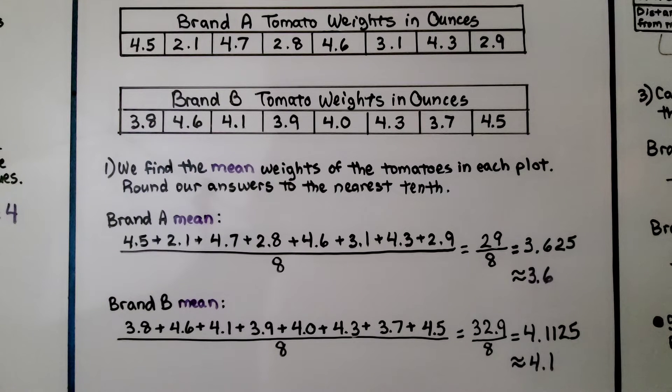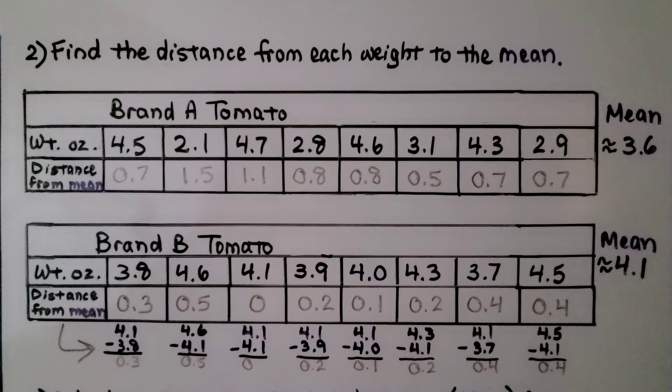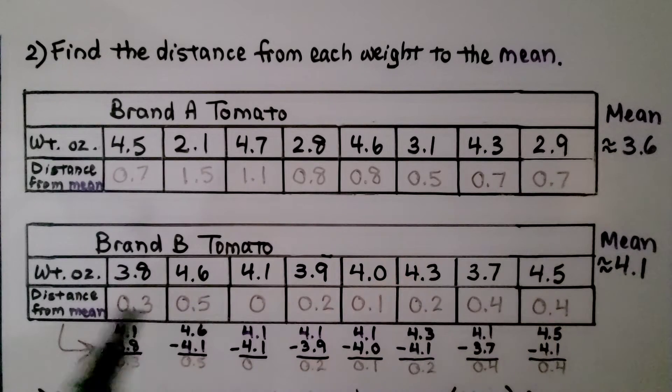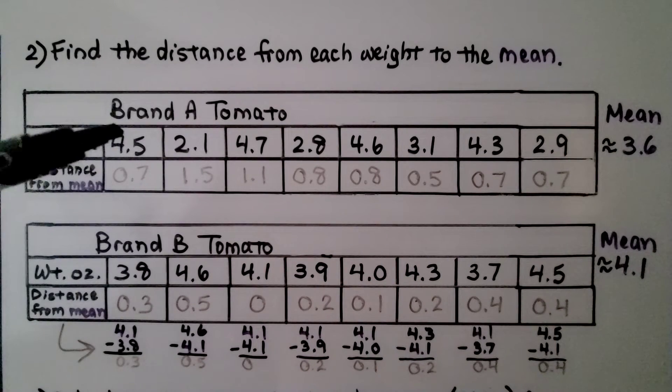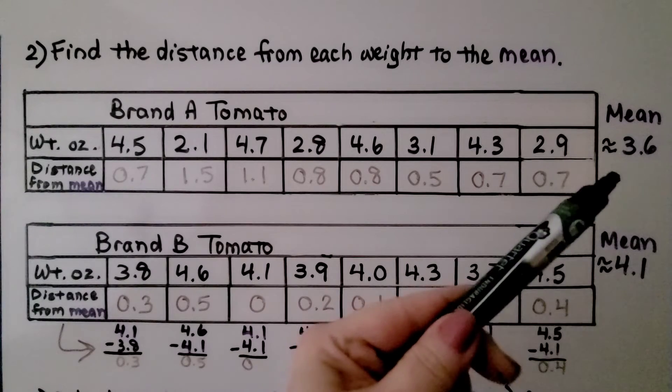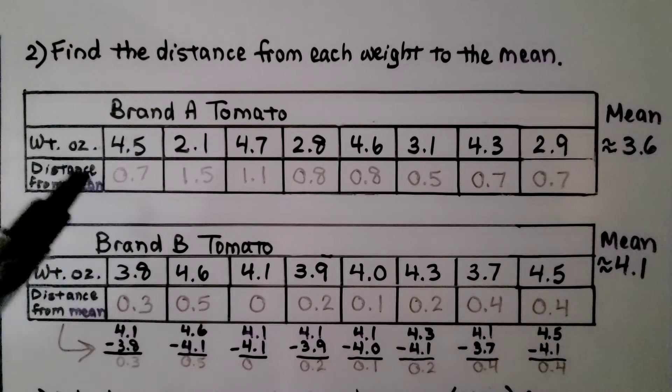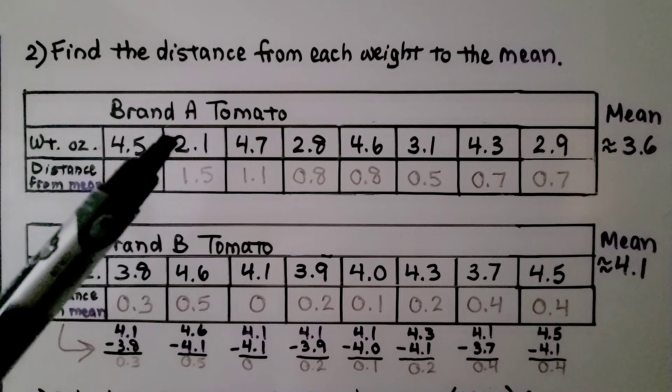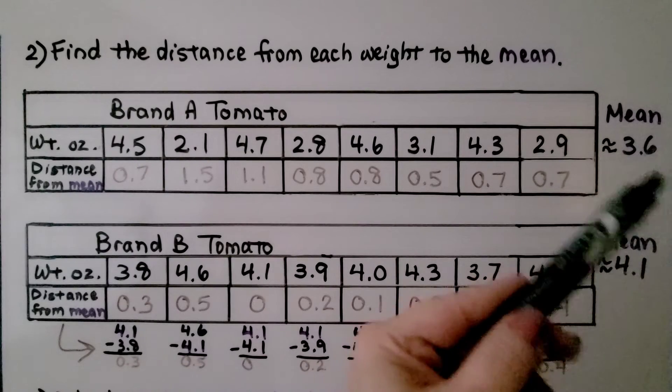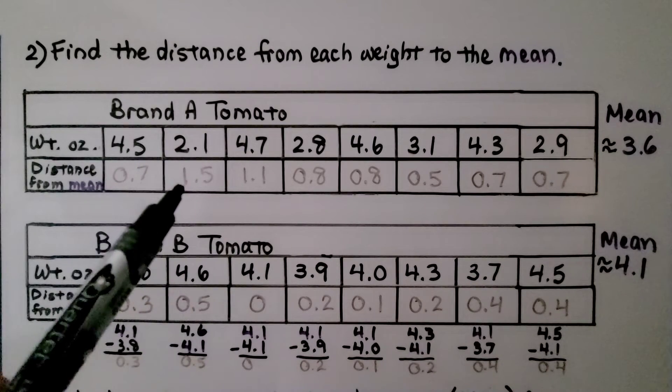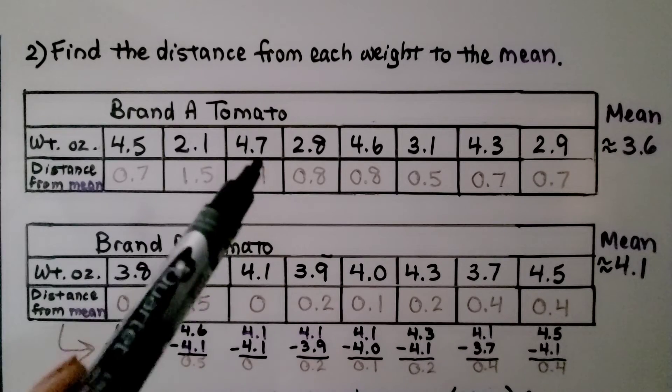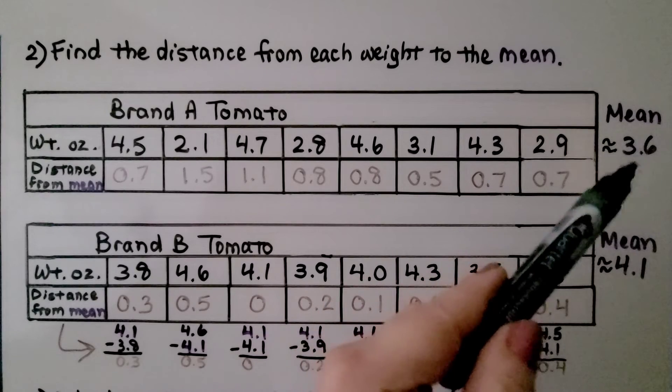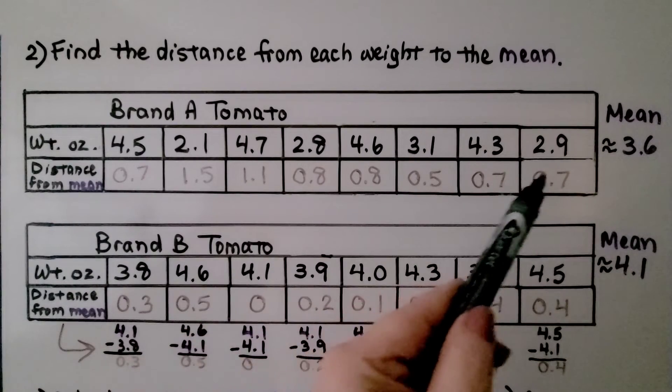The second step is we find the distance from each weight to the mean. We had a weight of 4 and 5 tenths, and the mean was about 3 and 6 tenths. We subtract and get 7 tenths. We find the distance between 2 and 1 tenths and 3 and 6 tenths. We subtract and get 1 and 5 tenths. We do it for each of the values. We find out how far away these values are from this mean. We write them in the table as the distance from the mean.